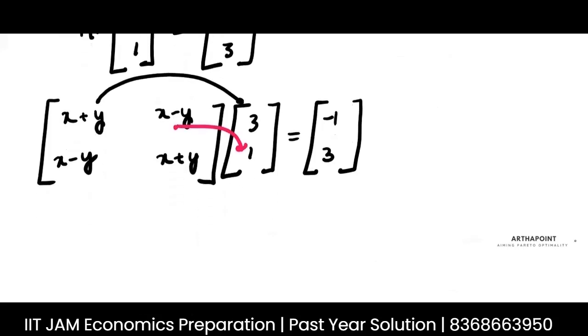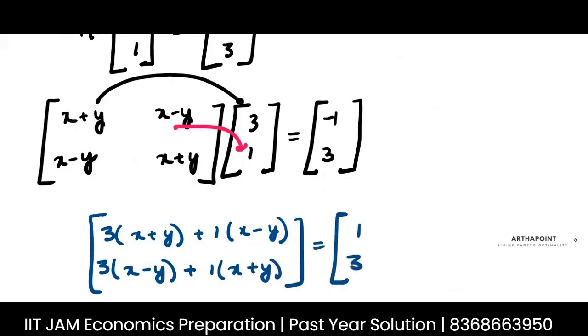So you will have 3 into X plus Y plus 1 into X minus Y. Similarly, 3 into X minus Y plus 1 into X plus Y is equal to minus 1 and 3.